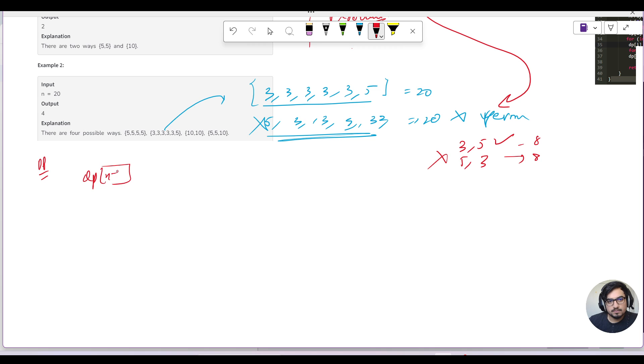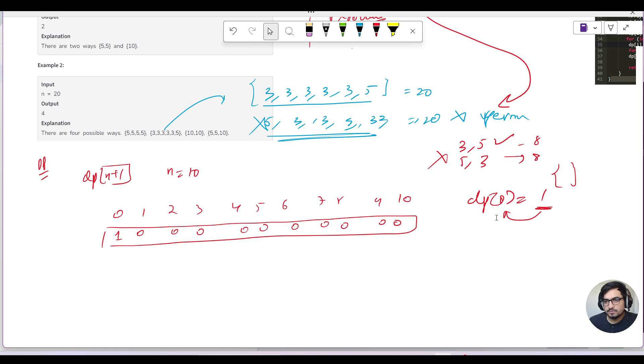So we will make a DP array of n+1. Let me take 10 as an example: 0, 1, 2, 3, 4, 5, 6, 7, 8, 9, and 10. Initially the values will be marked as zero. Only the first value will be marked as one. What I am saying is that dp[0] is 1. What are the possible number of combinations we can make for the sum zero? I can clearly say if I just take an empty set, no numbers in it, that would give me the sum zero. So that is why 1 is the answer for the zeroth entry.